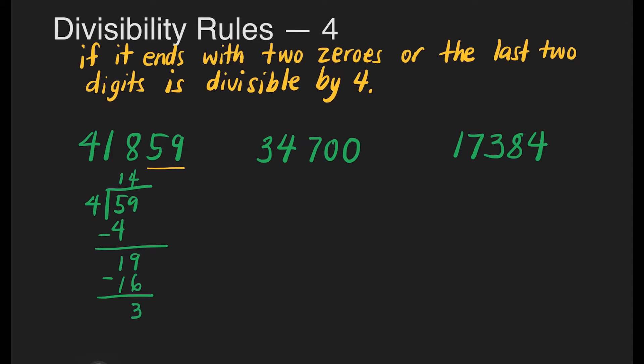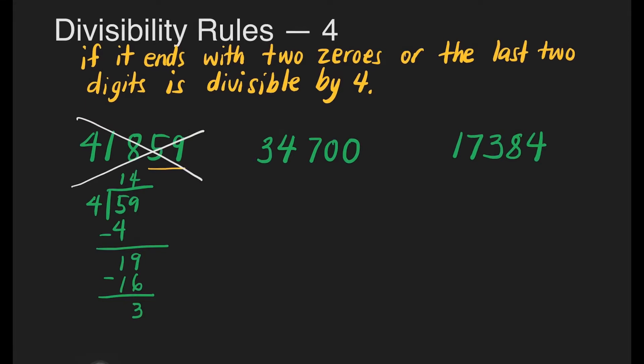It means 41,859 is not divisible by 4. Let's check the second number, 34,700. Automatically, this number is divisible by 4 because it ends with 2 zeros, making 34,700 divisible by 4.